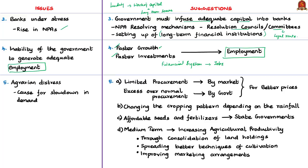Faster growth and faster investment will generate more employment, and improvement in the financial system may also trigger new jobs. Overall growth is key to more employment. The fourth issue is agrarian distress. One important dimension of growth is that it will happen only if there is adequate increase in demand. The main concern is the slowdown in rural demand, and agrarian distress is the main cause. When distress is due to a fall in prices of agricultural crops, limited procurement by the government can help balance prices.